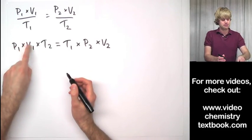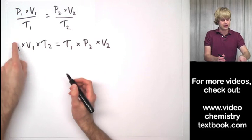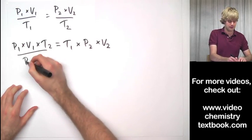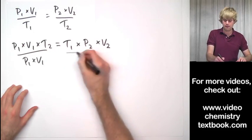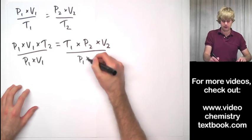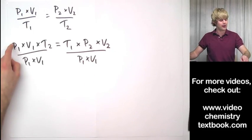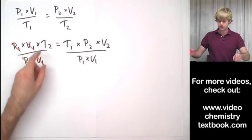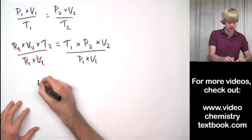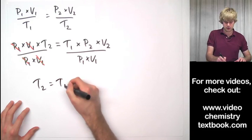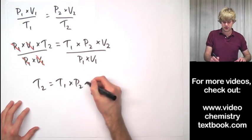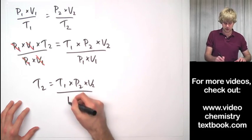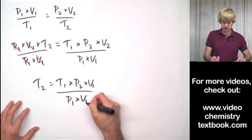So solving for T2, let's divide both sides by P1 and V1 to get rid of them from this side. We have P1 over P1, they cancel out. And V1 over V1, they cancel out. And we're left with T2 equals T1 times P2 times V2 divided by P1 times V1.